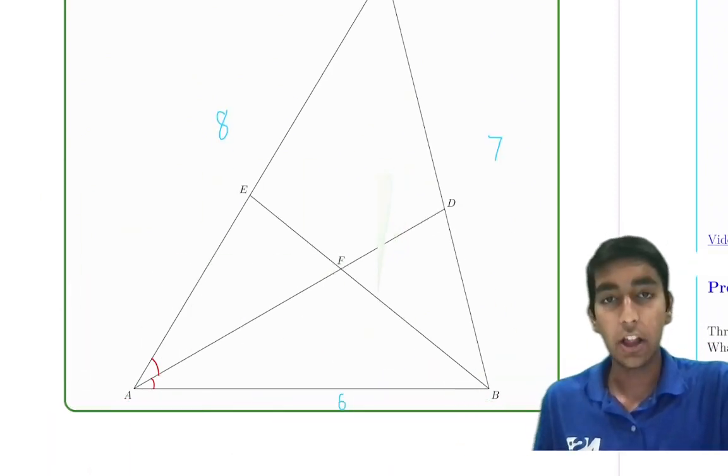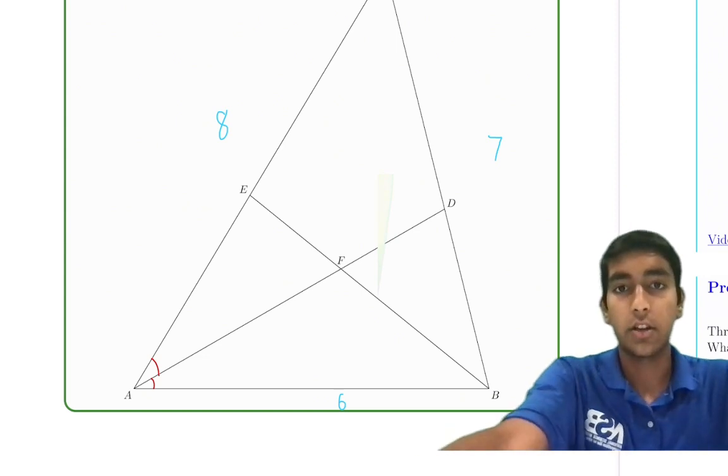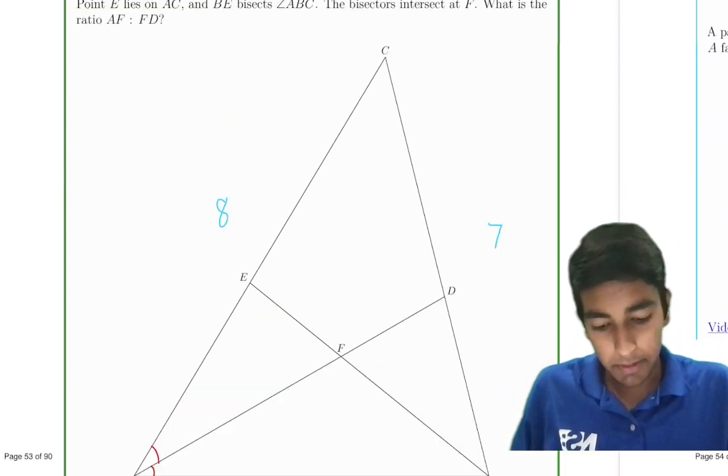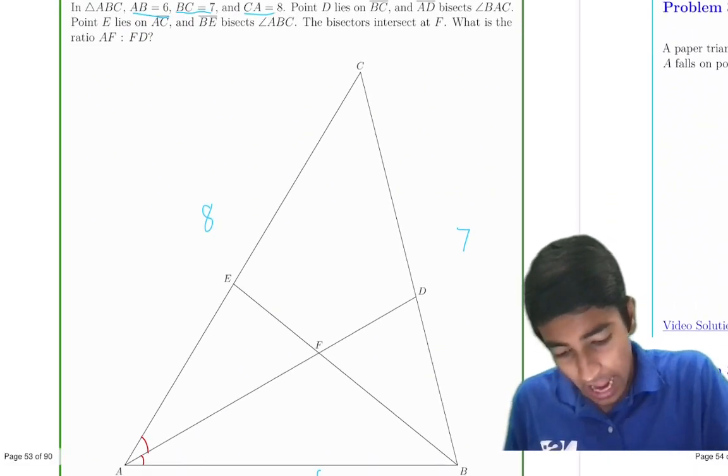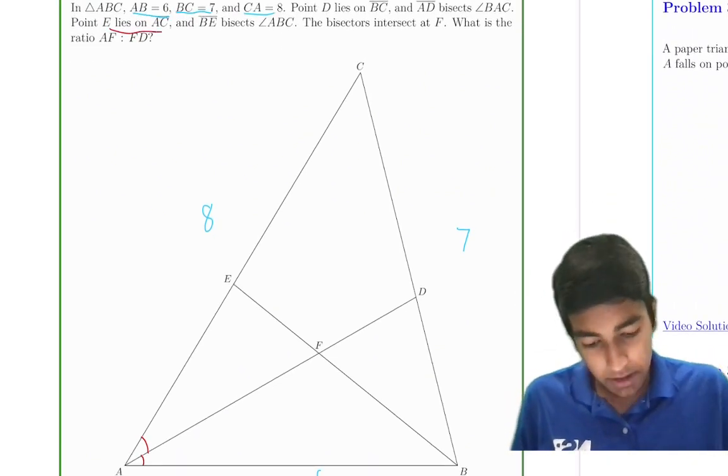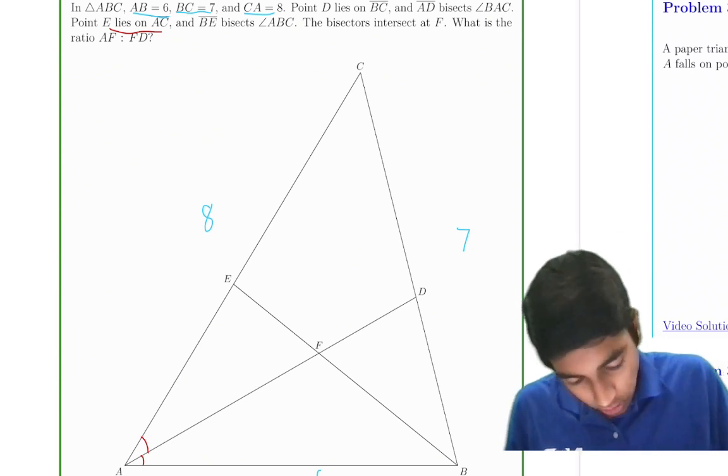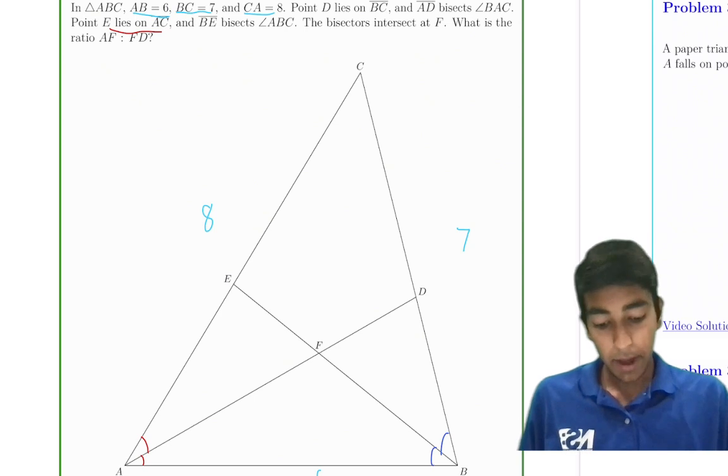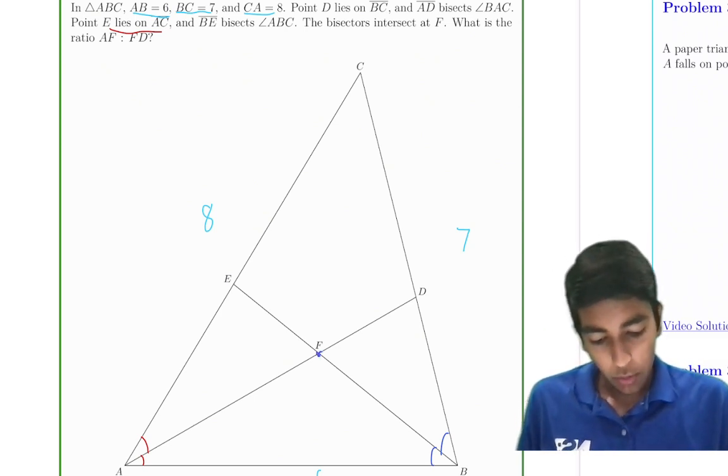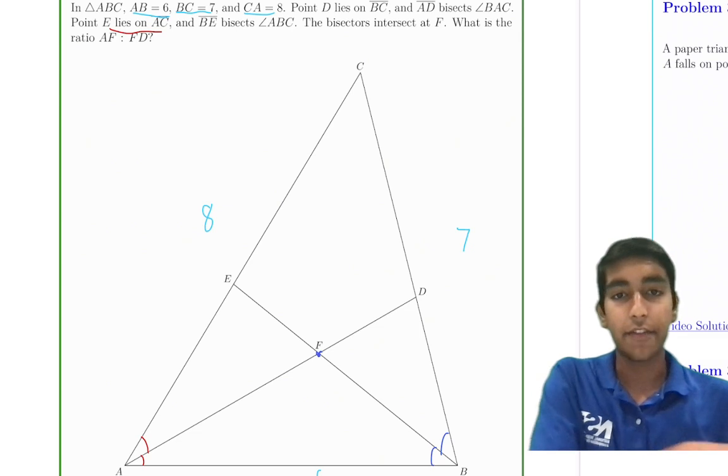The problem also says point E lies on AC, and BE bisects ABC. So this is also an angle bisector right here. The bisectors intersect at this point, F. What is the ratio AF to FD?